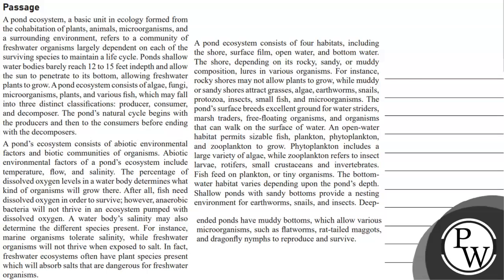Hello. Let's read the question. A pond ecosystem is a basic unit in ecology formed from a coercion of plants, animals, microorganisms and a surrounding environment. It refers to a community of freshwater organisms largely dependent on each of the surviving species to maintain a life cycle.